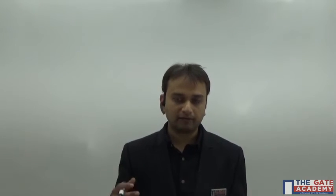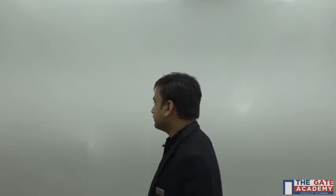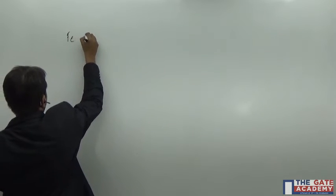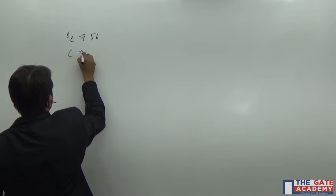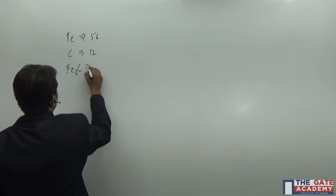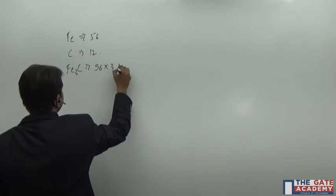The atomic weight is given for iron and carbon both, and you have to determine the percentage of carbon by weight in iron carbide which is Fe3C. It's very simple. Fe, the atomic weight for Fe is 56, for carbon it's 12, and for Fe3C it is 3 times 56 plus 12.